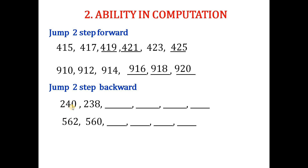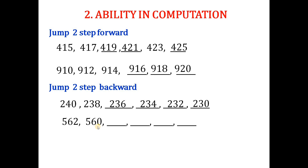Jump two steps backward — we subtract 2 from each number. Starting from 240: 240 minus 2 gives 238, then 236, 234, 232, and 230. Similarly, starting from 562: 562 minus 2 gives 560, then 558, 556, 554, and 552.